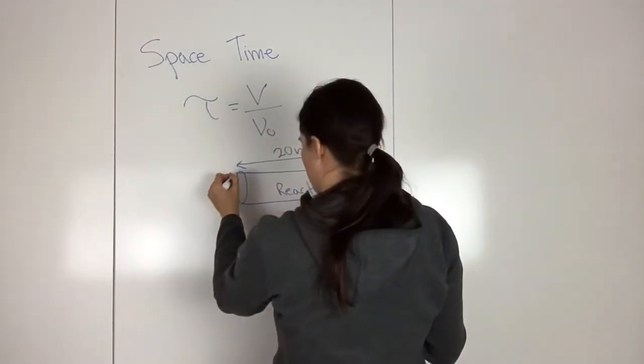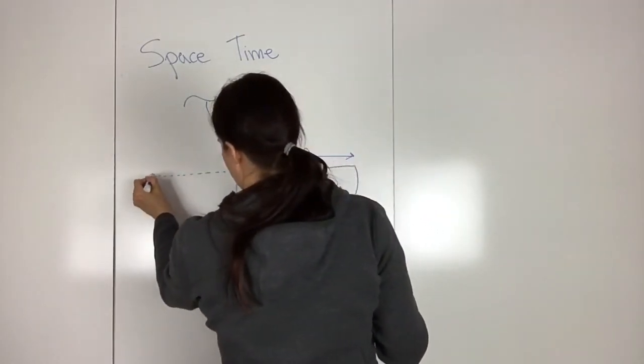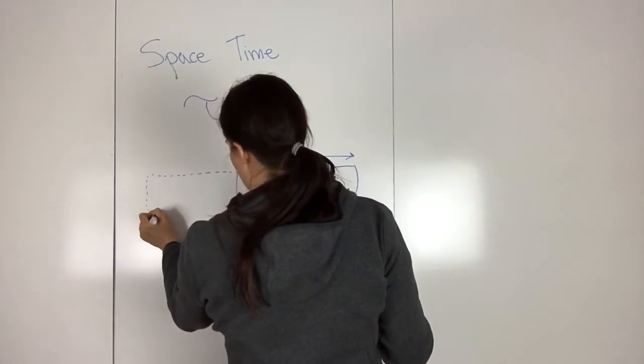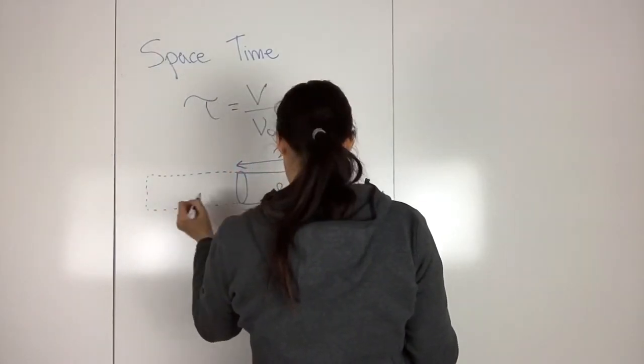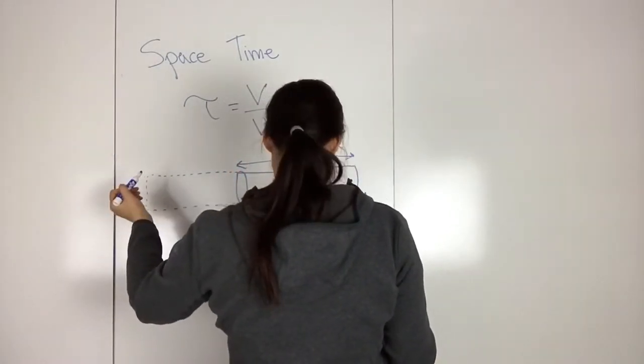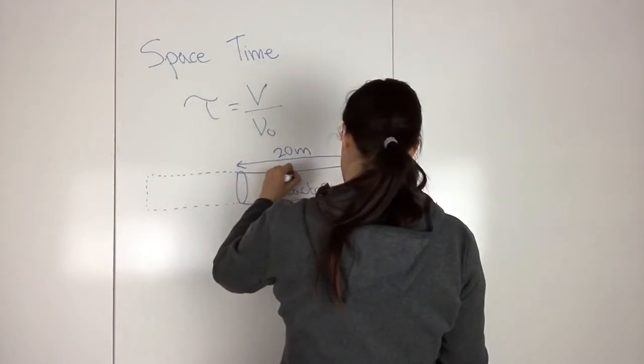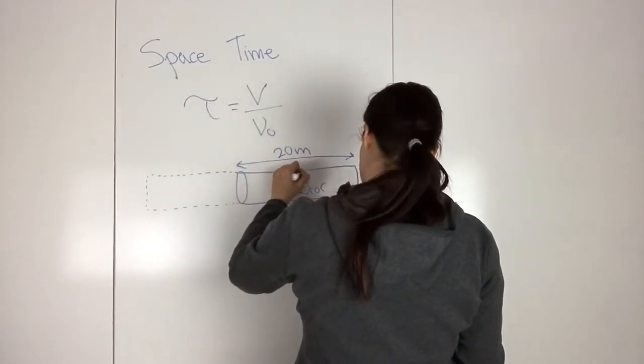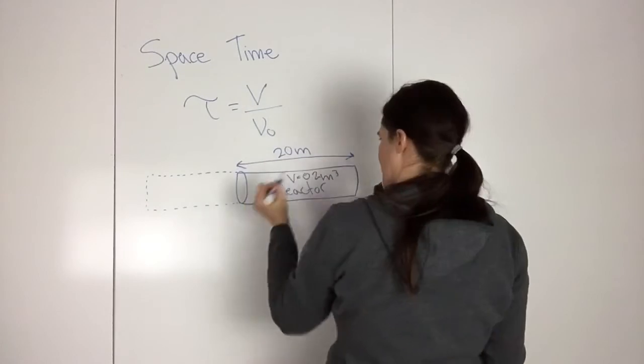The space time is, if you have this fluid in front of your reactor, and say this volume is 0.2 meters cubed...